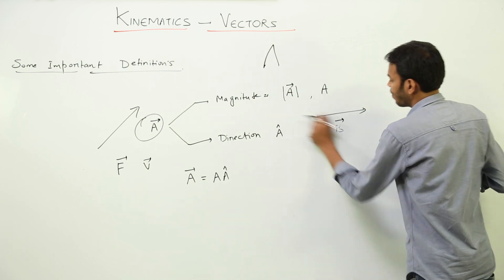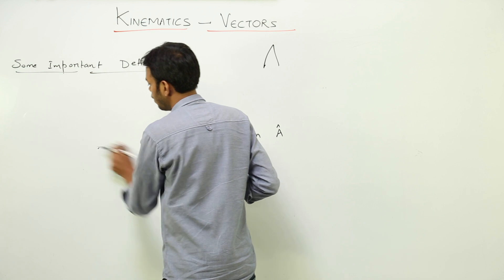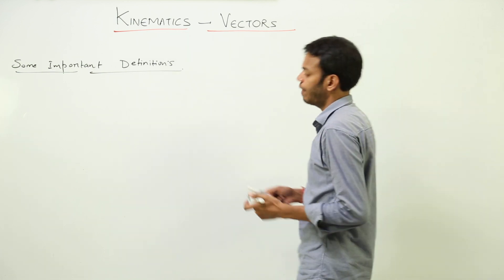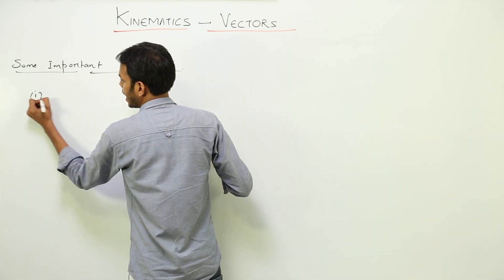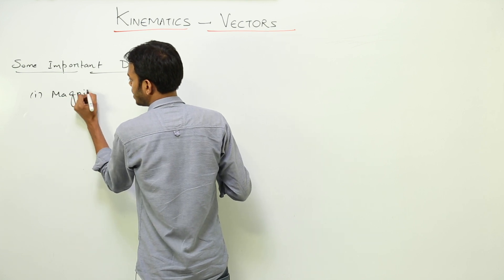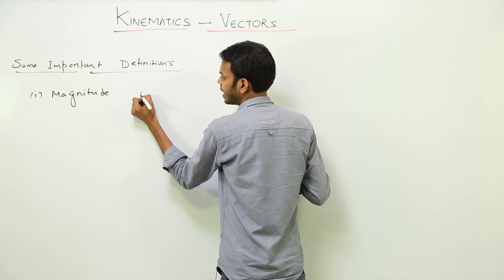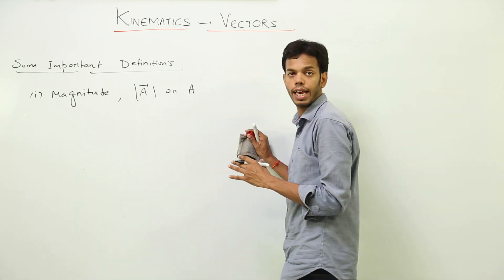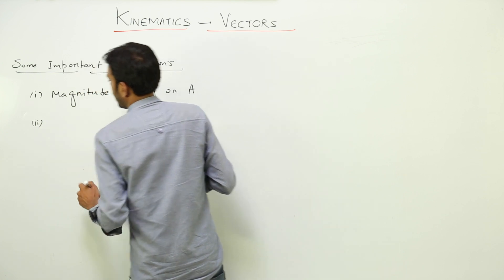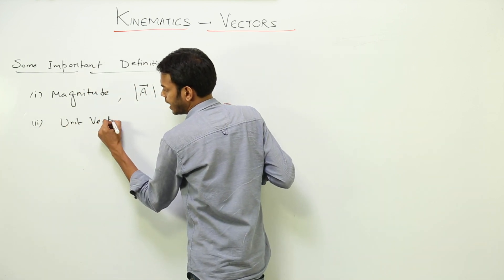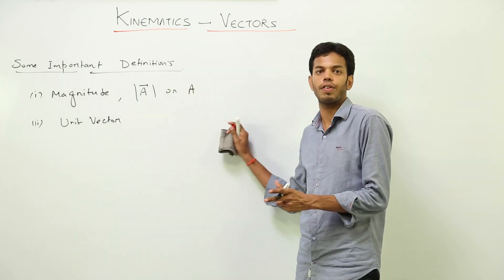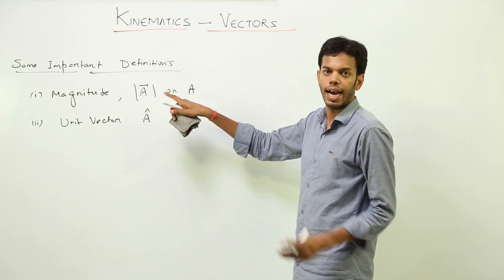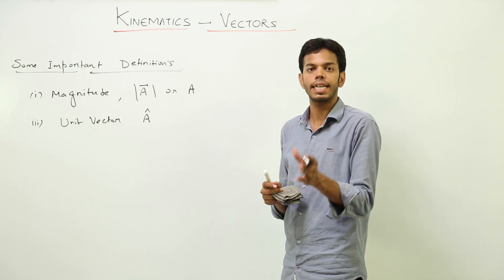Let us start with some basic definitions of vectors. First, magnitude: magnitude is the strength or the numerical value of the vector, represented by the modulus sign or simply the capital alphabet without an arrow. Second, unit vector: a unit vector represents the direction of a vector — it is the alphabet with a cap. A vector equals magnitude times direction.